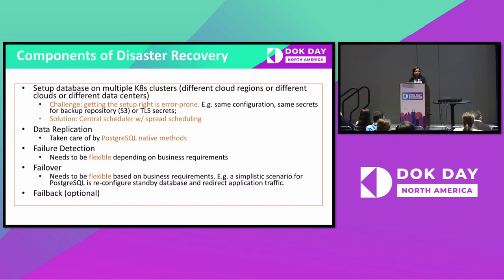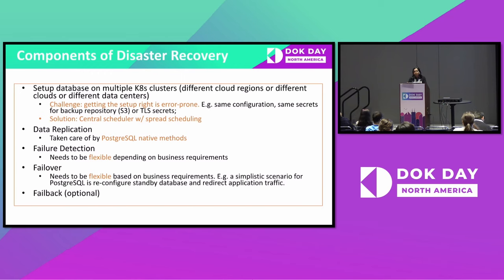Next comes failure detection — how do you detect the disaster and trigger the DR workflow? This is dependent on your monitoring tools, business requirements, and how long you tolerate failure before triggering recovery. The failover step also needs to be flexible: every organization has their own runbook, and maybe it's not fully automatic — you might want to send an email to someone with authority before switching to standby. These are treated as pluggable components in the architecture. Failback is very similar to failover and is omitted from this short talk.